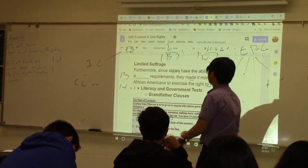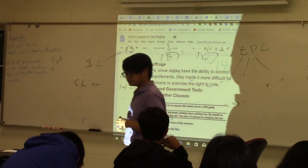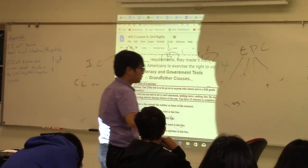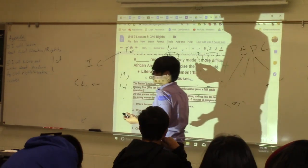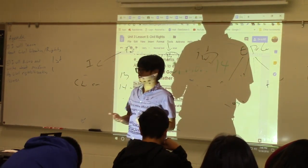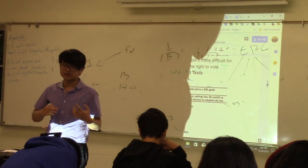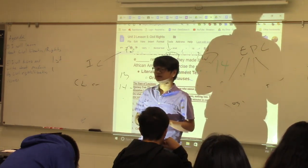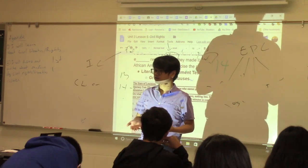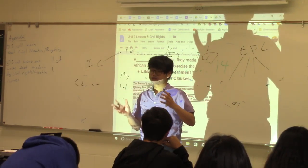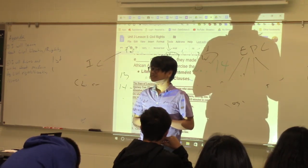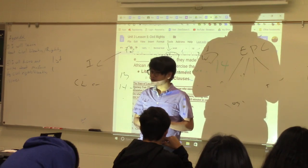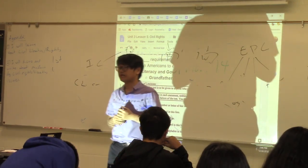How did they make it harder? Literacy tests — state-mandated tests where you had to prove you could read and write. If you couldn't prove that, you couldn't vote. Minorities were more likely to be illiterate during this time, so it affected them disproportionately. But then in the 1960s, many black people were getting educated and literacy tests were no longer effective, so they made the tests harder. They passed government tests — instead of proving you could read and write, you had to prove your knowledge of the Constitution and the government of the United States. If you scored 70 or below, you couldn't vote.